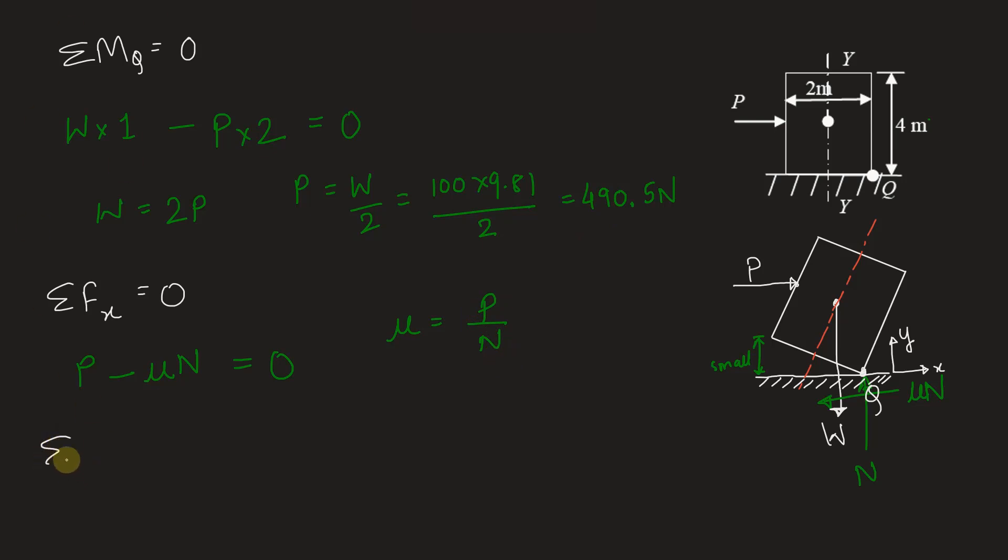Again applying the vertical force equilibrium, that is summation Fy equal to 0. We have upward is normal reaction and downward is W. So we have n minus w equal to 0. Clearly n is equal to W. So n is just 100 into 9.81 which is 981. So to calculate mu we substitute this here, we have mu equal to 490.5 divided by 9.81 into 100 which is 981. This is equal to 1 by 2. So we have our answer of mu as 0.5 or 1 by 2.